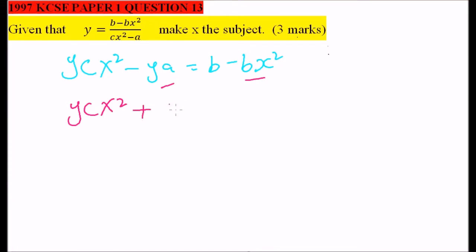once it crosses to the other side, it becomes positive. So bx squared is equals to b minus ya.